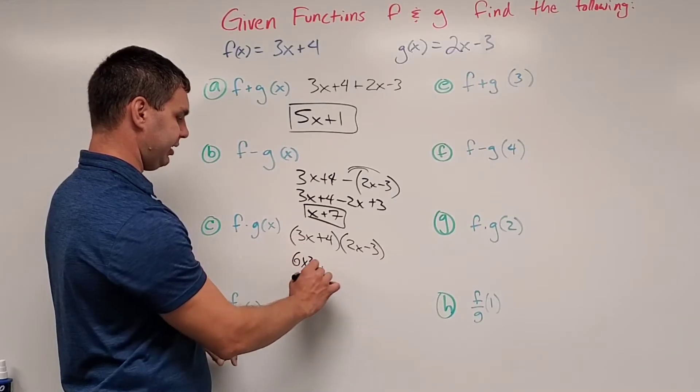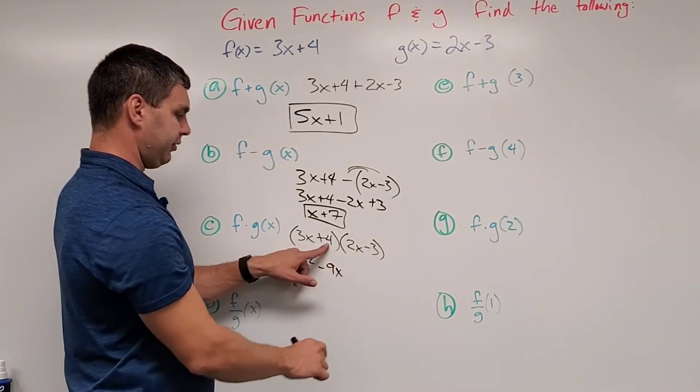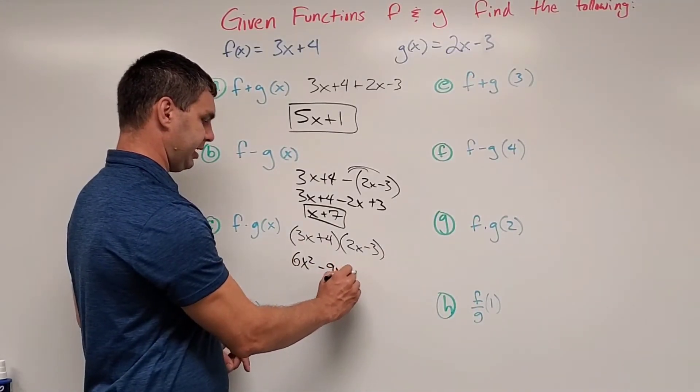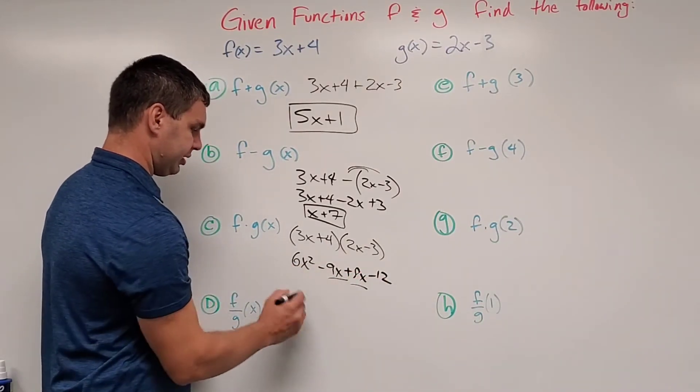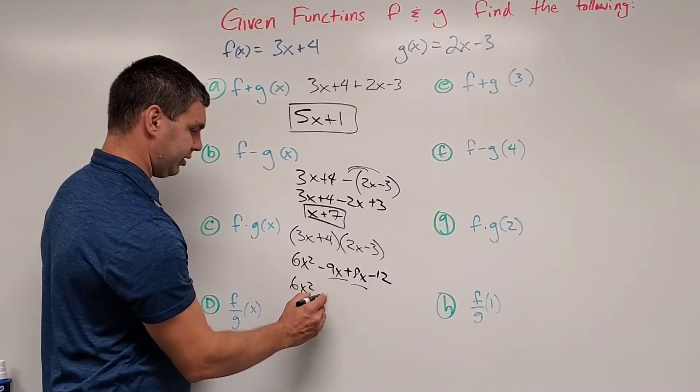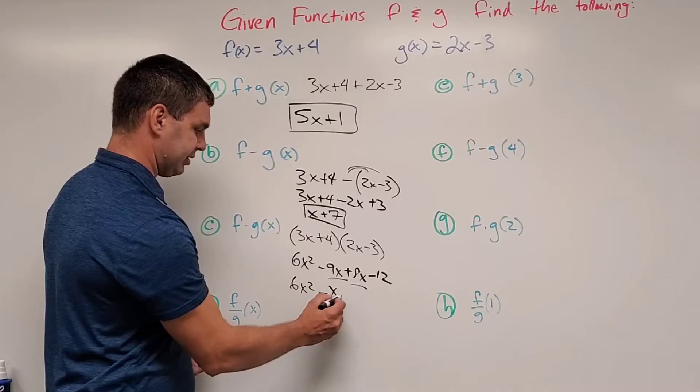3x times negative 3 is negative 9x. 4 times 2x is positive 8x. And 4 times negative 3 is negative 12. Combine your like terms. So you get 6x squared minus x minus 12.